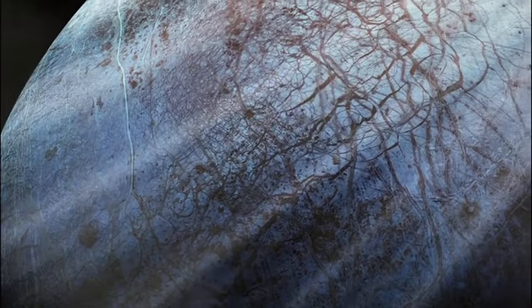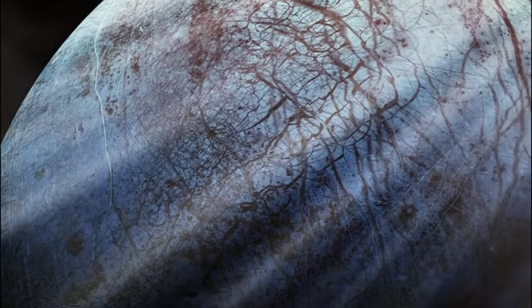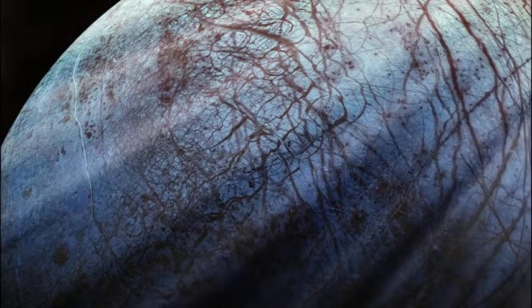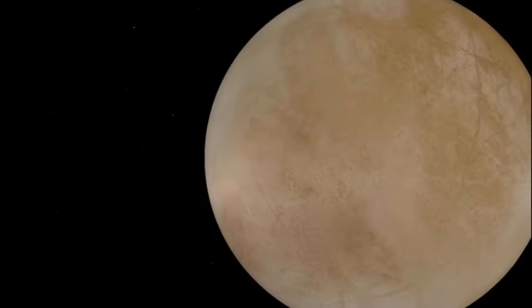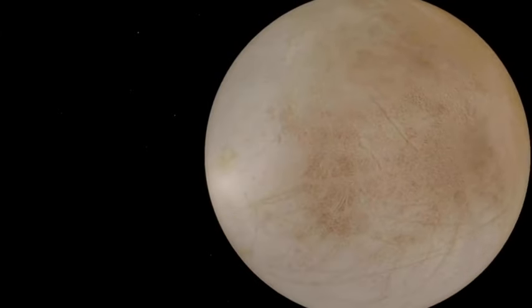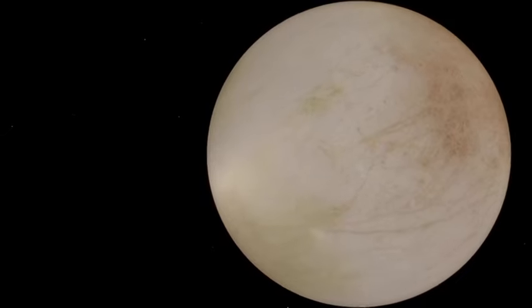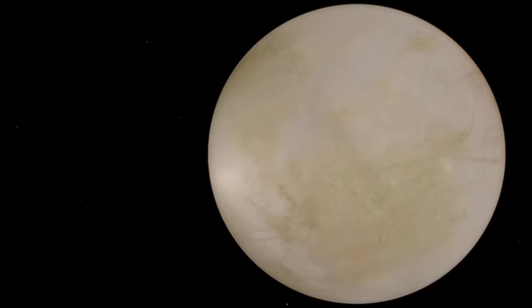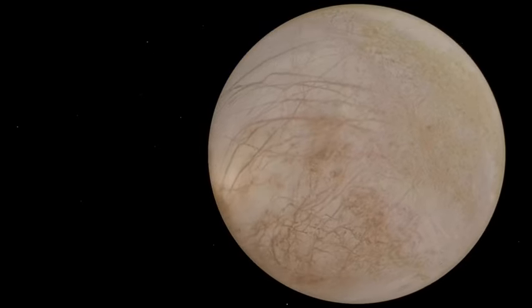But is it really possible for life to start on a frigid moon hundreds of millions of kilometers away from the sun? Well, life as we know it seems to have four main requirements: liquid water, certain chemical elements, an energy source, and of course, time.